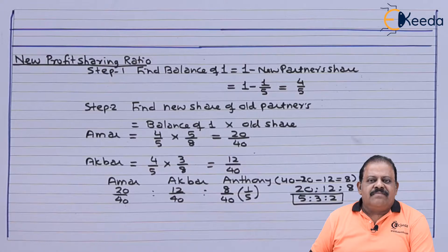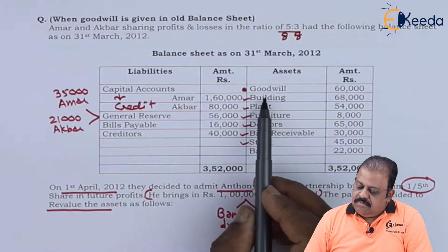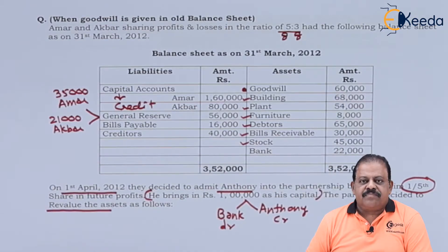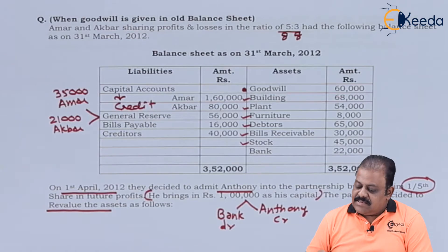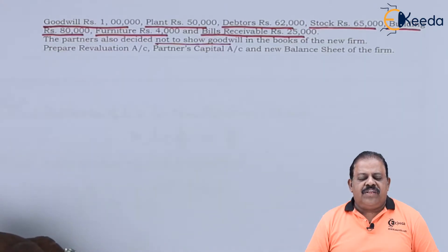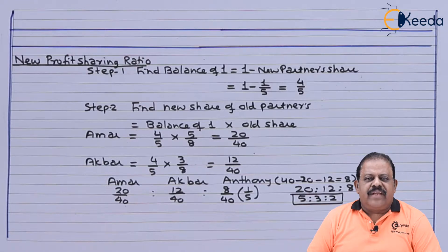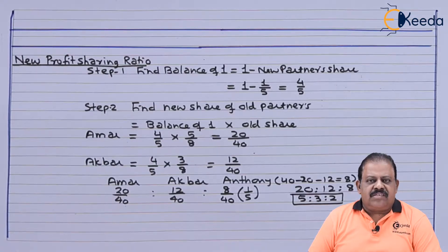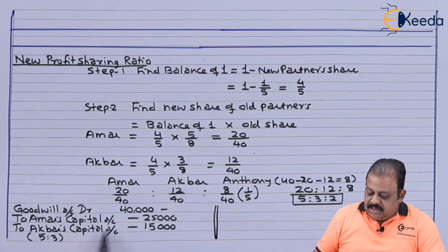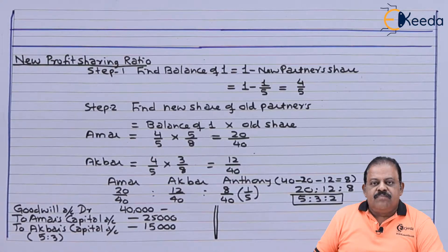Let us understand adjustment of goodwill. Value of goodwill is given in the balance sheet itself, 60,000. Goodwill is revalued; the revalued amount is 1 lakh. It means goodwill is increased by 40,000. This 40,000 we can directly credit to old partners to give them benefit of the increase in goodwill. Goodwill account debit 40,000: to Amar's capital account 25,000, to Akbar's capital account 15,000.